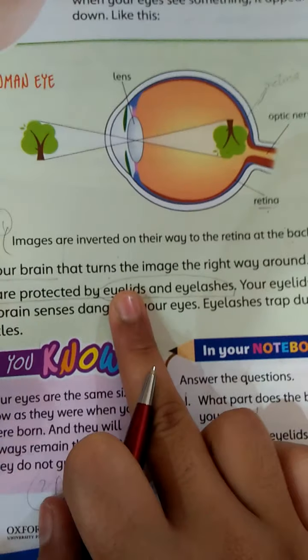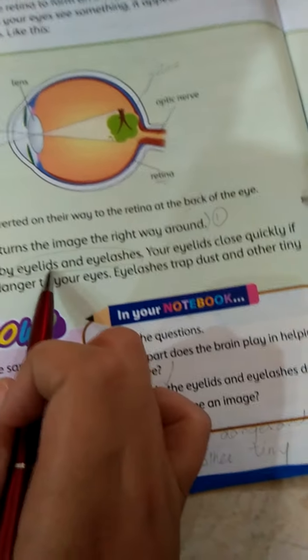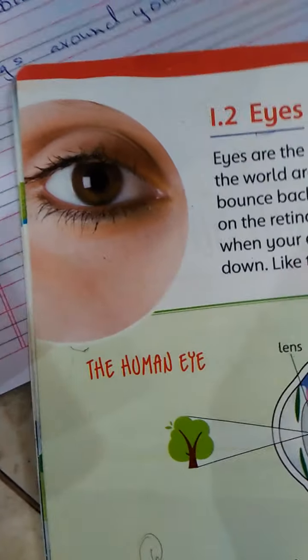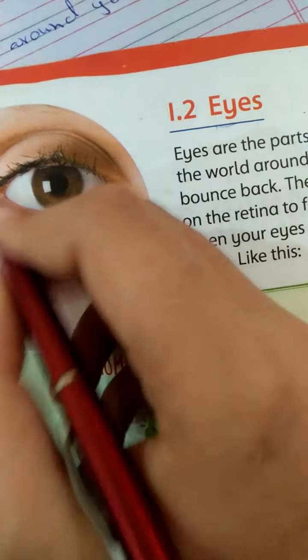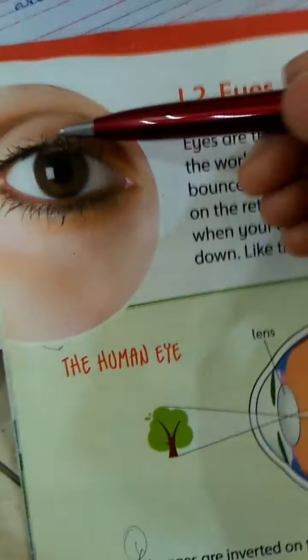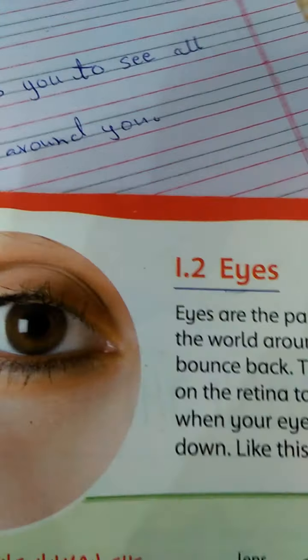It is protected by eyelids and eyelashes. This is the eyelid and this is the eyelashes. Eyelashes and eyelids are protected. Now I have some main parts we are going to study.